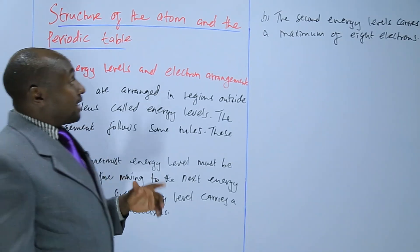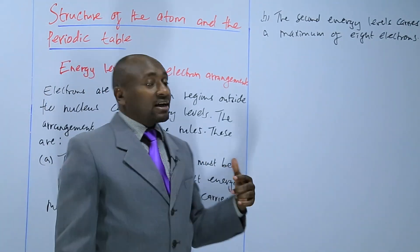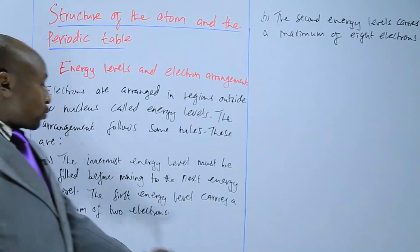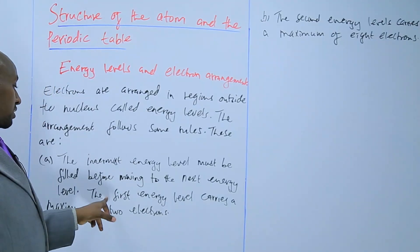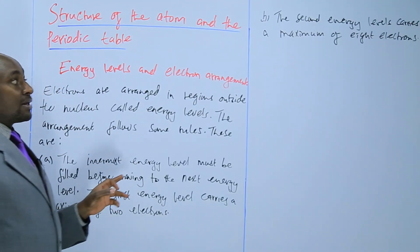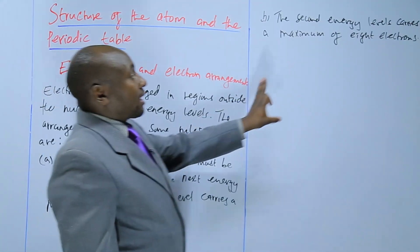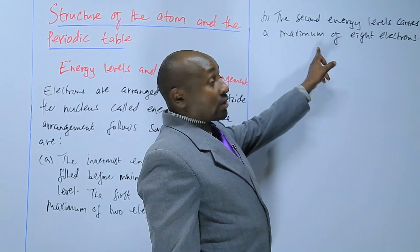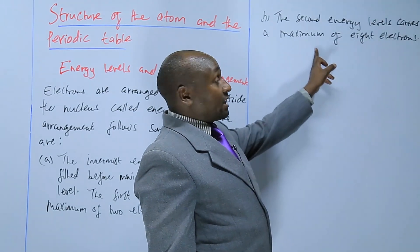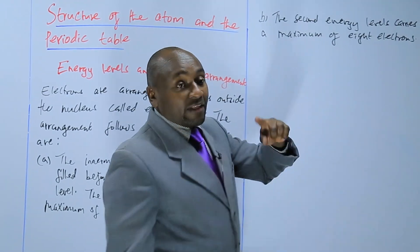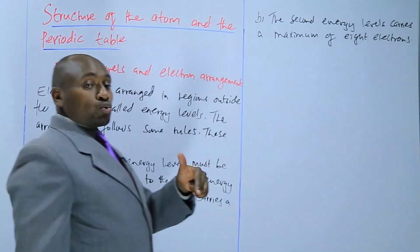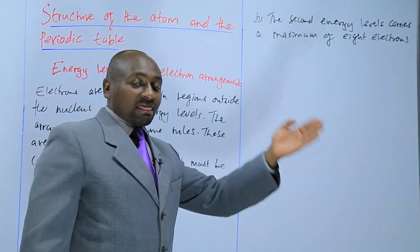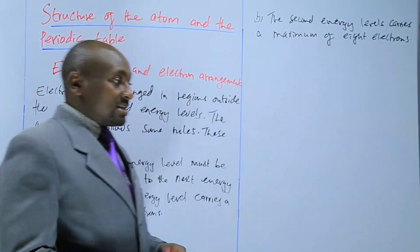If the electrons are more than ten, let's say they are twelve: two will be put in the first energy level, eight will be put in the second energy level — that makes a total of ten — and then the remaining two electrons will be pushed to the third energy level.